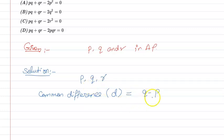And if I talk about Q and R, then we will talk about common difference. So, that means Q minus P equal to R minus Q.